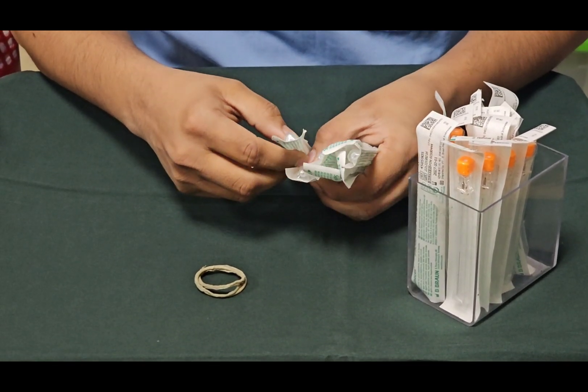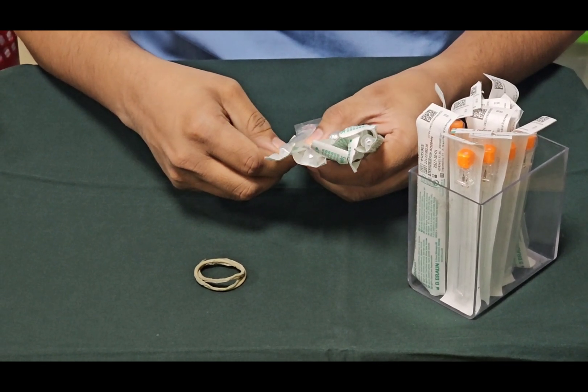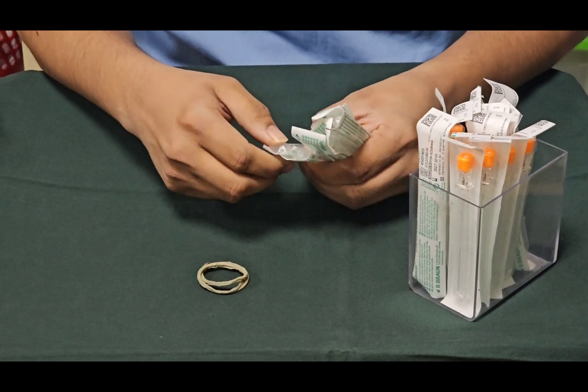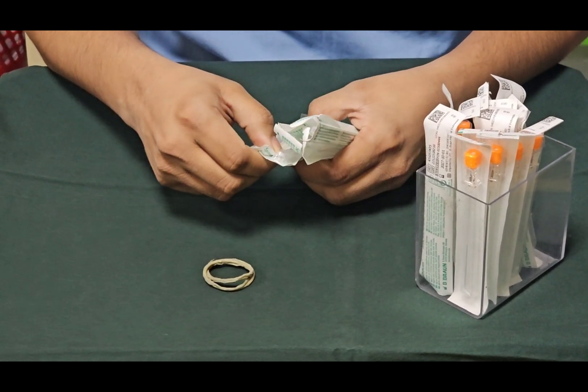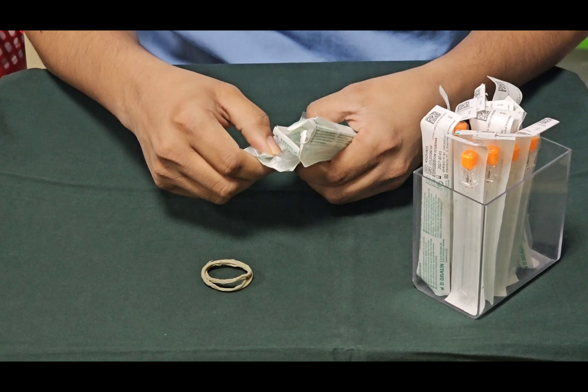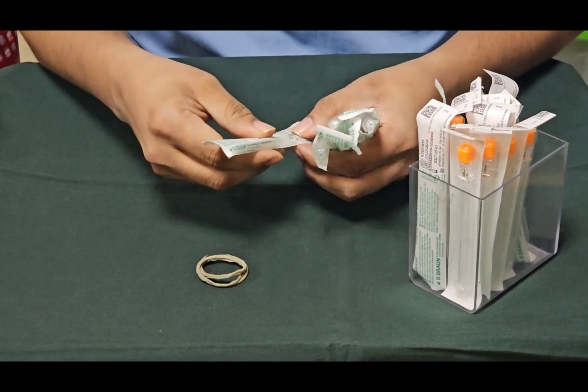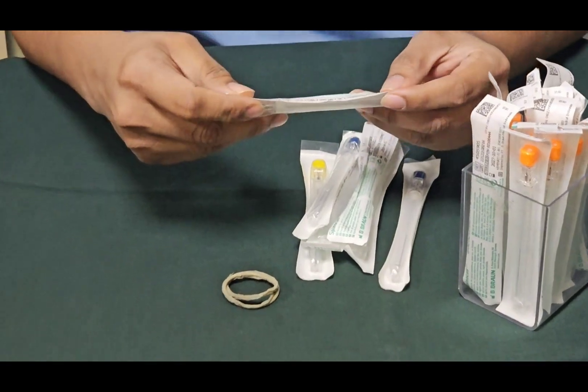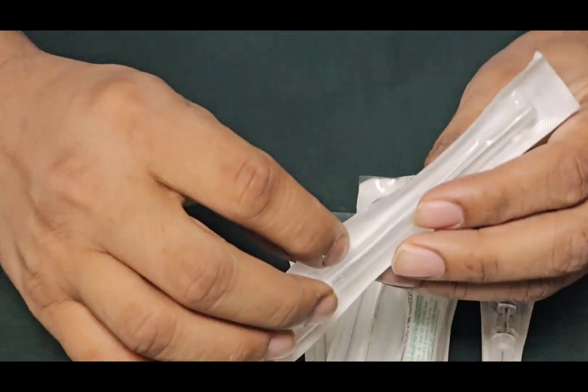And there are different types of spinal needles, but today we are actually talking about Quincke needle which has a cutting edge at the end of it. We are not talking about pencil tip needle which has a blunt tip. And we are showing you this is an 18 gauge spinal needle.